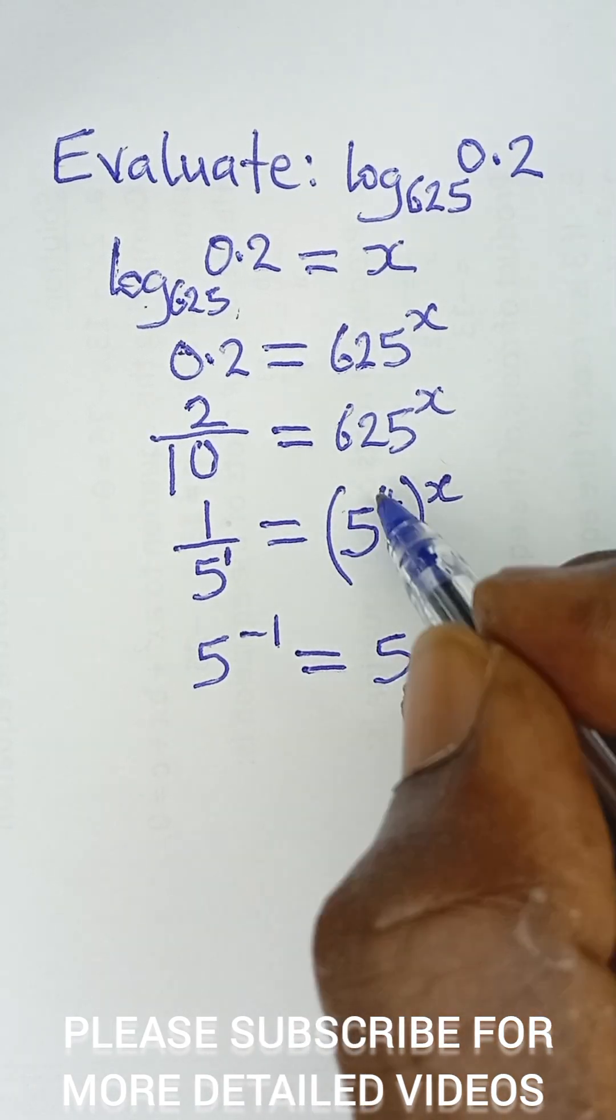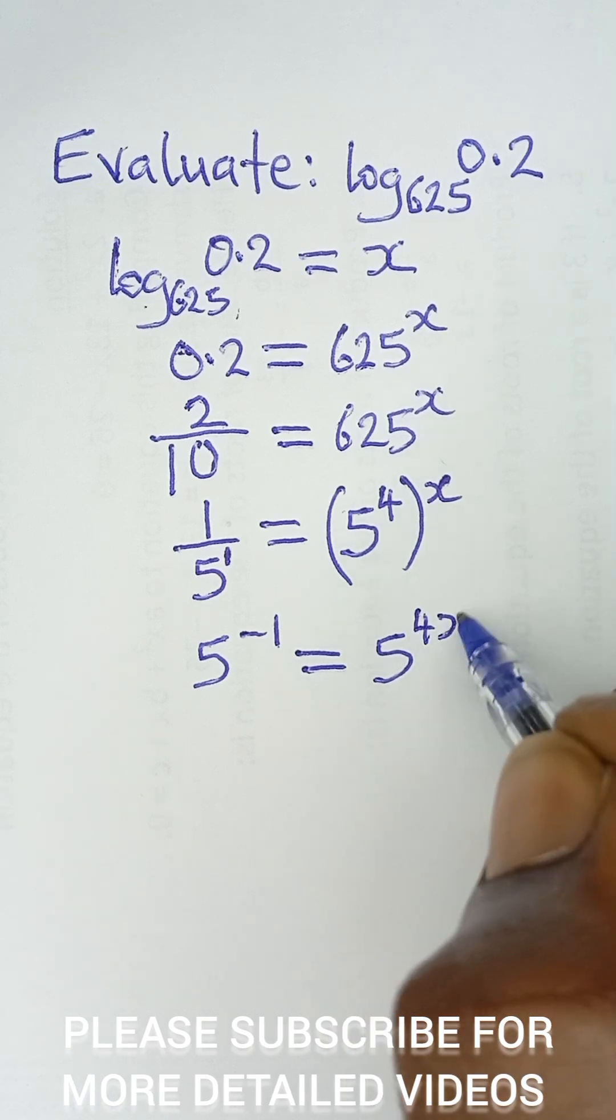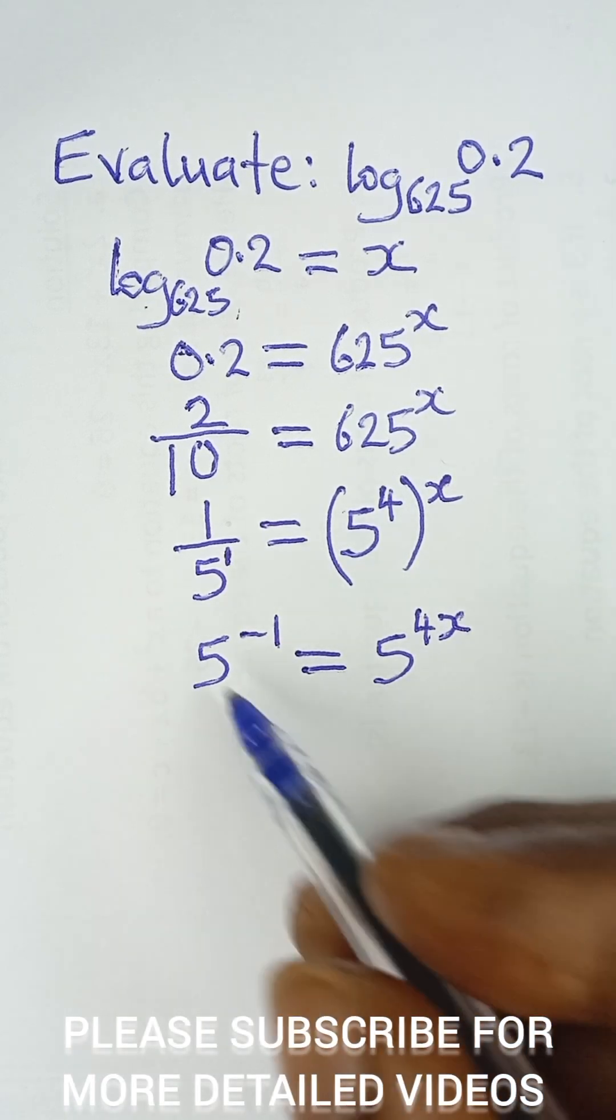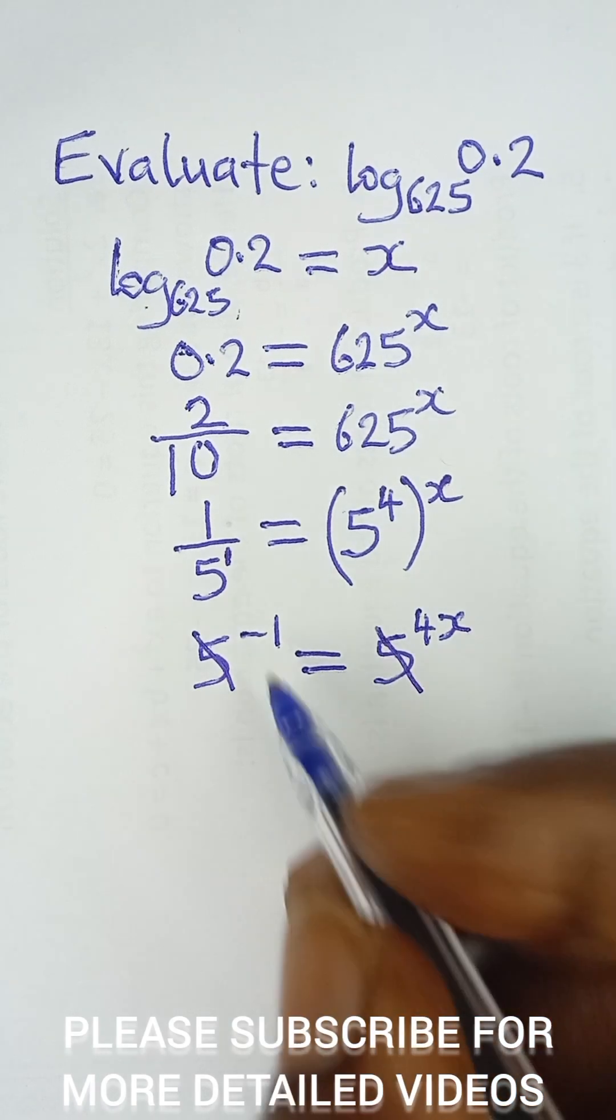5 raised to the power of... the powers can be multiplied now, so 4 multiplied by x will give us 4x. And then now that the bases are equal, I can simply ignore the base, cancel the base and equate the power.